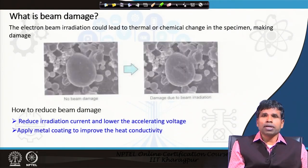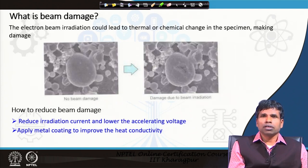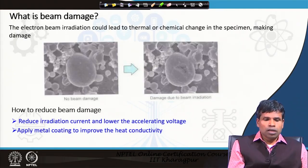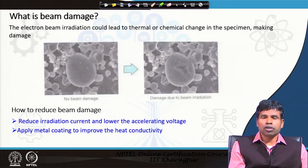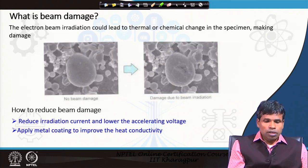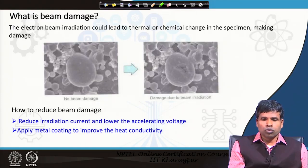Beam damage can also destroy the image. Electron beam irradiation can lead to thermal and chemical changes in the specimen. This is particularly strong when the specimen is a soft sample, such as a polymer or biological sample — then beam damage is aggressive. In order to reduce beam damage, irradiation current should be reduced and a lower acceleration voltage should be applied. By applying a lower acceleration voltage, the energy of the electron beam is low, and therefore we will do less damage to the sample.